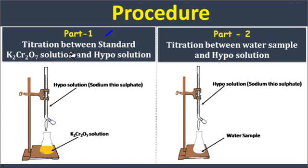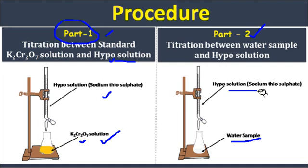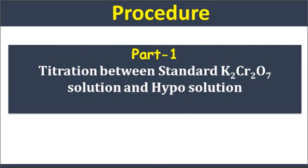In the first part, titration between standard potassium dichromate solution and hypo solution is performed — this is the standardization of hypo solution. The meaning of standardization is that we determine the exact normality of the hypo solution by titrating it with potassium dichromate solution. In the second part, titration of water sample with hypo solution is performed using starch indicator and potassium iodide as a source of iodine.